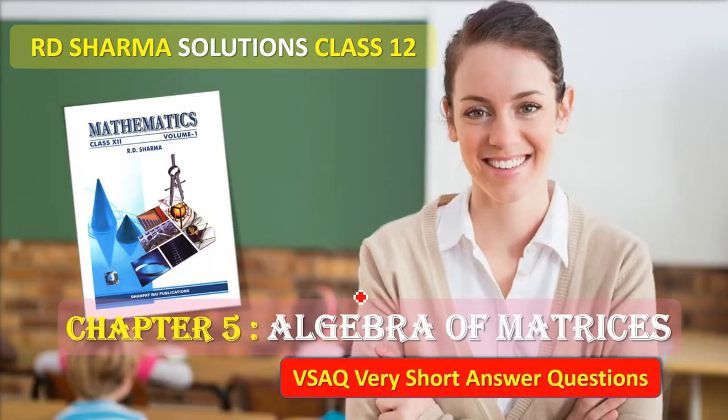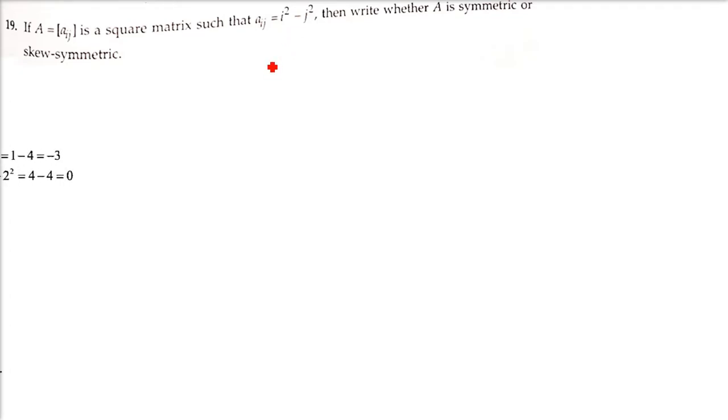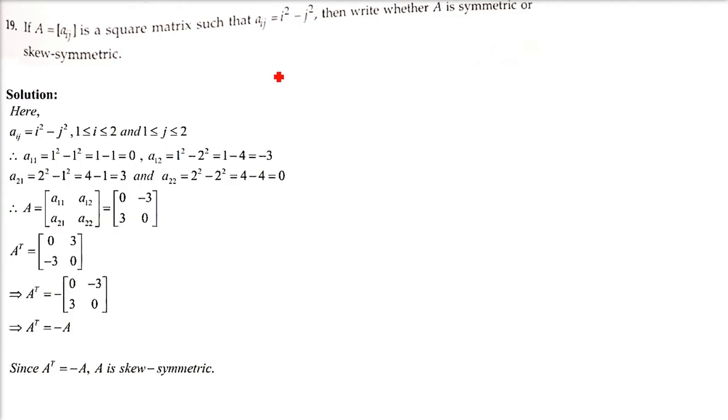RD Sharma solution class 12th, chapter 5, Algebra of Matrices. We are taking very short answer questions. If A is a square matrix such that Aij equals i squared minus j squared, write whether A is symmetric or skew-symmetric. Since the order is not given, we can assume it is a 2 by 2 matrix.